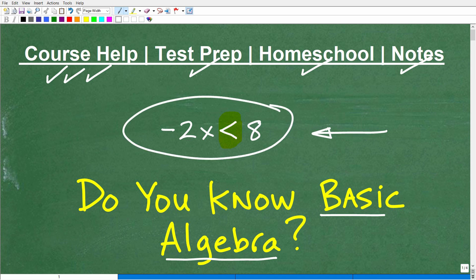Okay, so let's get into this problem. Negative 2x is less than 8. Now, one thing about inequalities in algebra is that the steps that we take to solve this are very similar to solving equations.